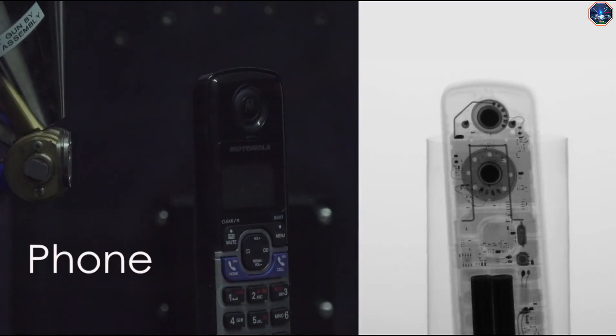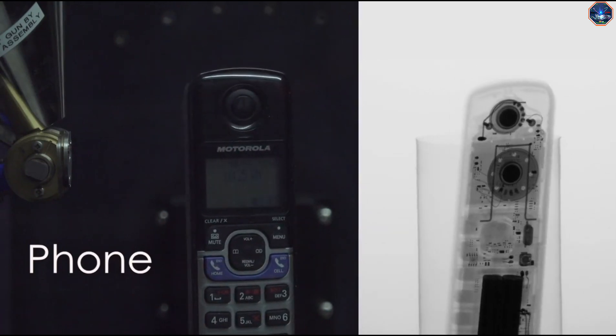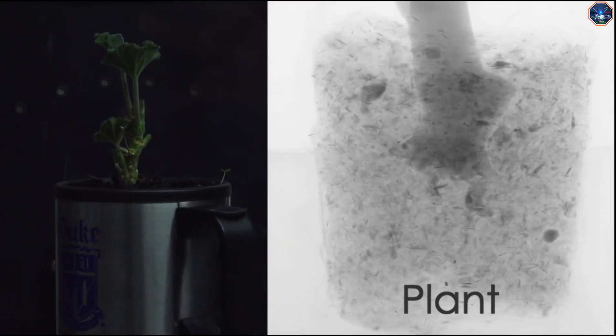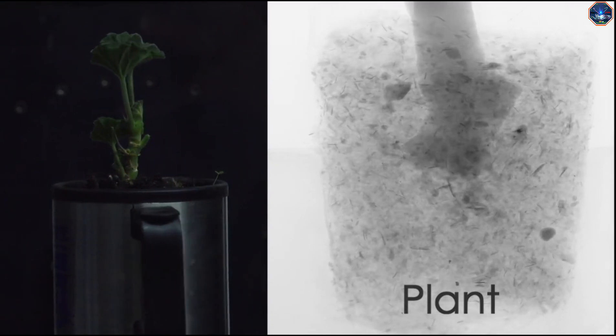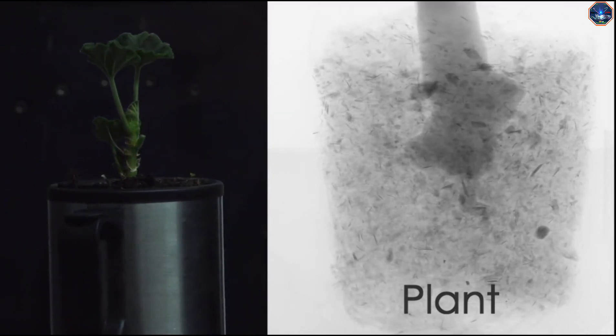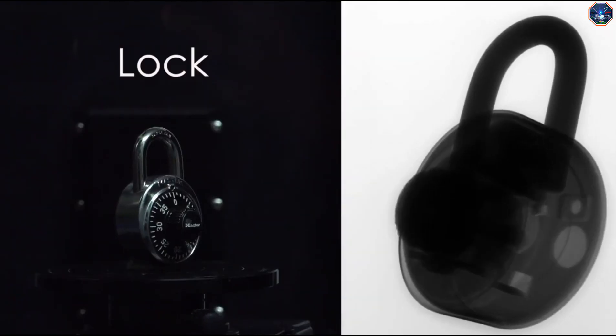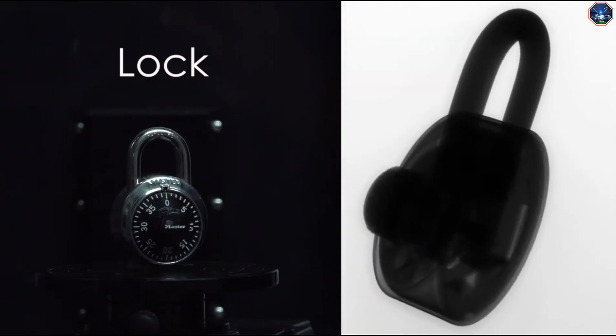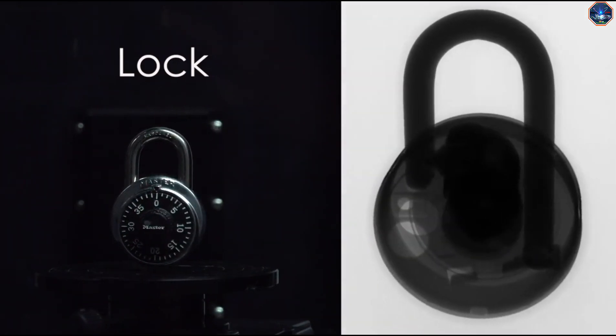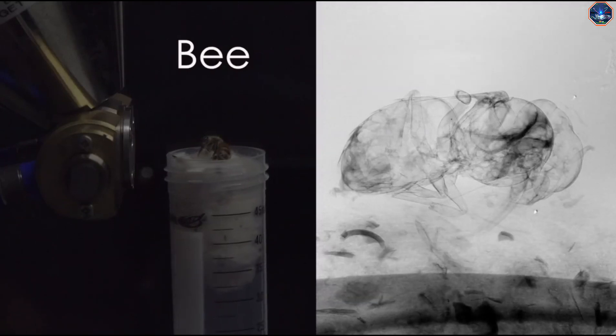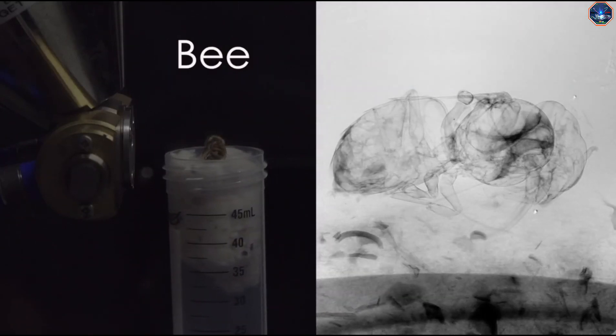The stage that holds the samples in the MicroCT spins around while the rest of the equipment stays stationary. This is unlike a CT scanner in a doctor's office where the machine wraps around a patient. Because the stage spins, everything needs to be carefully positioned in order to stay in the field of view.